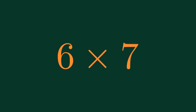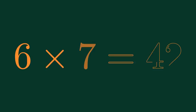What is 6 times 7? 6 times 7 is equal to 42.